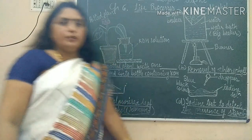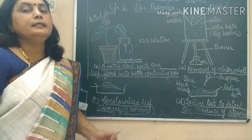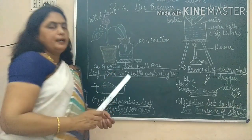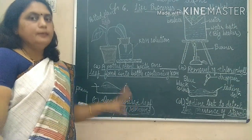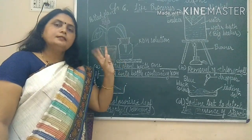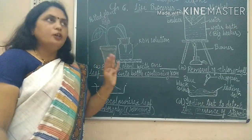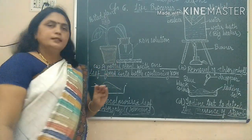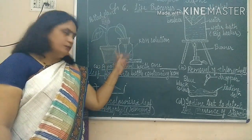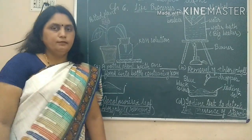This experiment proves that carbon dioxide is essential for photosynthesis. In case of the part of the leaf inside the bottle, three out of four conditions were available - sunlight, water, and chlorophyll - still photosynthesis could not take place because the fourth condition, carbon dioxide, was not available. So carbon dioxide is essential for photosynthesis.